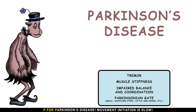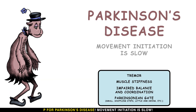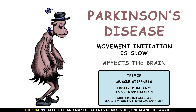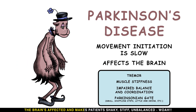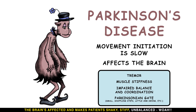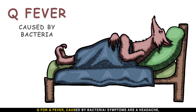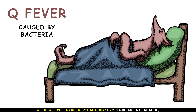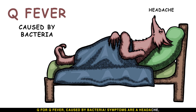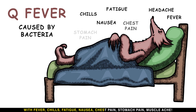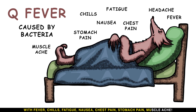P is for Parkinson's disease — movement initiation is slow, the brain is affected, and patients become shaky, stiff, and unbalanced. Q is for Q fever, caused by bacteria; symptoms include headache, fever, chills, fatigue, nausea, chest pain, stomach pain, and muscle ache.